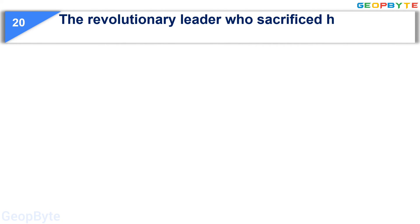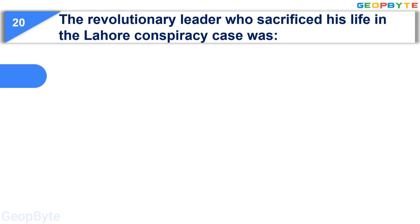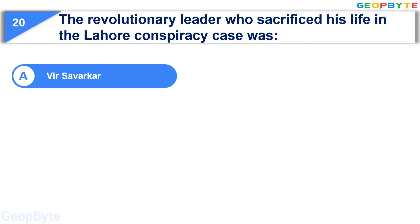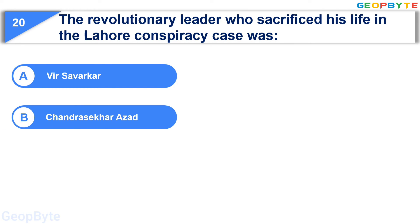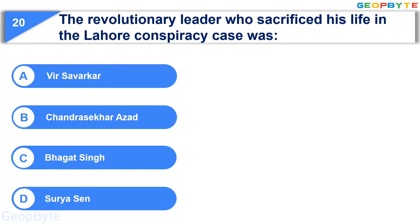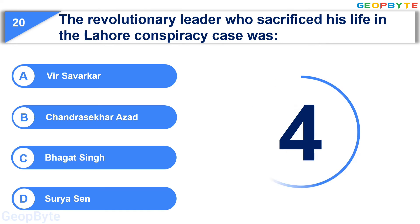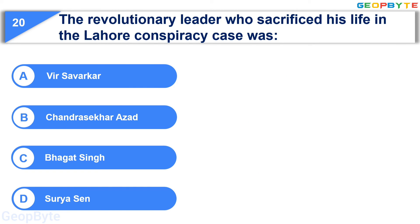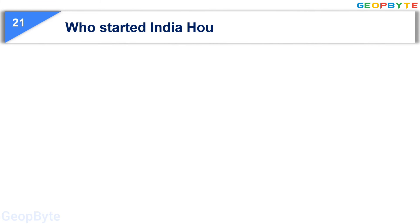Moving to the twentieth question: the revolutionary leader who sacrificed his life in the Lahore Conspiracy Case was — Option A: Veer Savarkar, Option B: Chandrashekhar Azad, Option C: Bhagat Singh, Option D: Surya Singh. Your time starts now. Your time is up and the correct answer is Option C: Bhagat Singh.